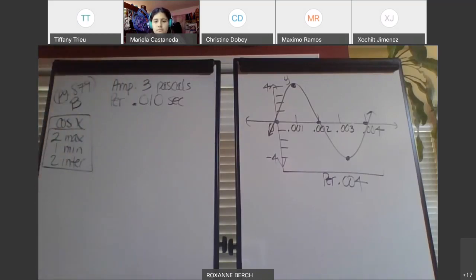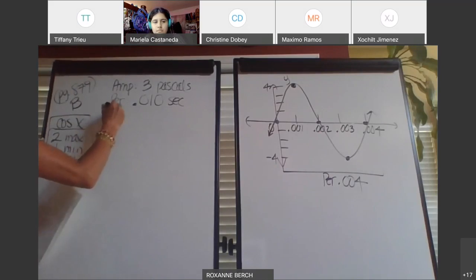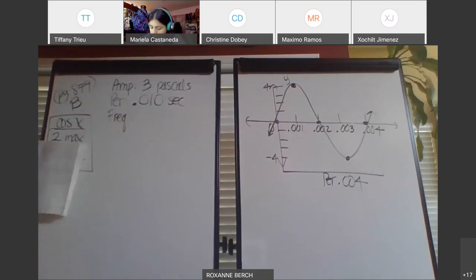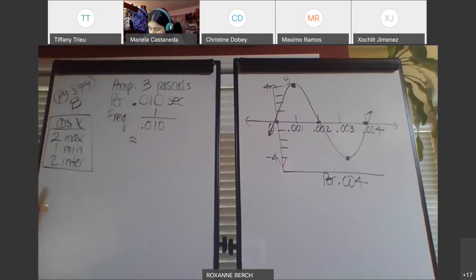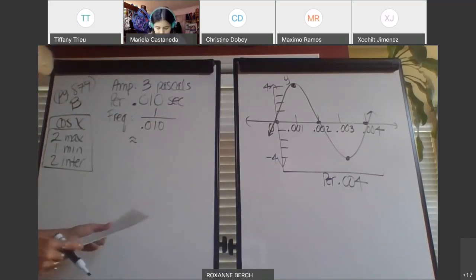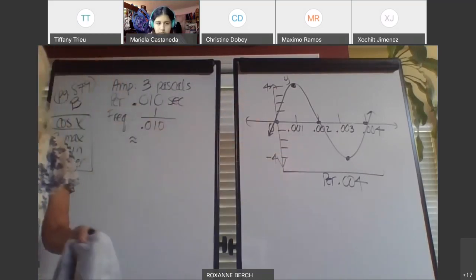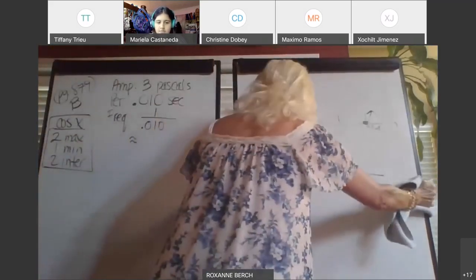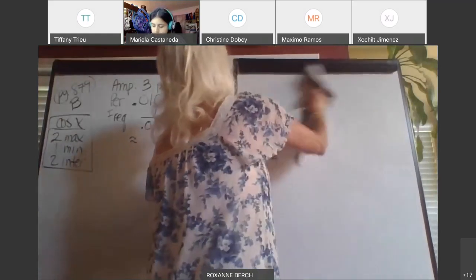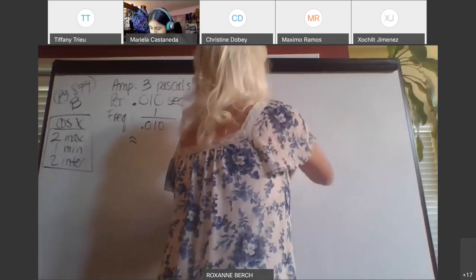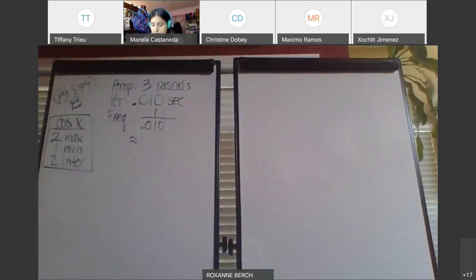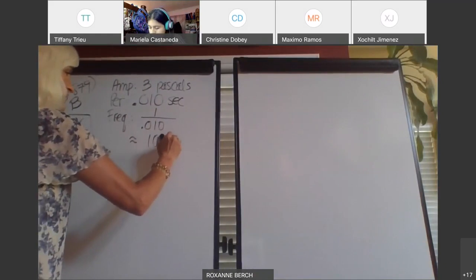The first thing we want to do is find the frequency, which is 1 over the period, given in hertz. So 1 divided by 0.010 — can somebody give me that? The answer is 100 hertz.